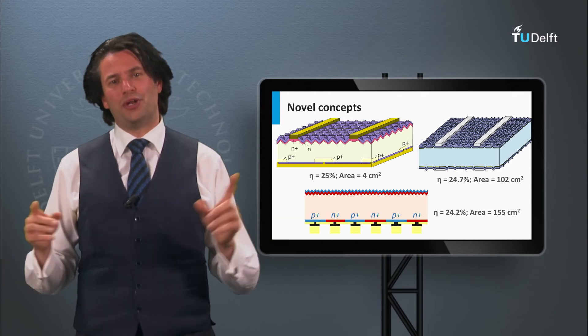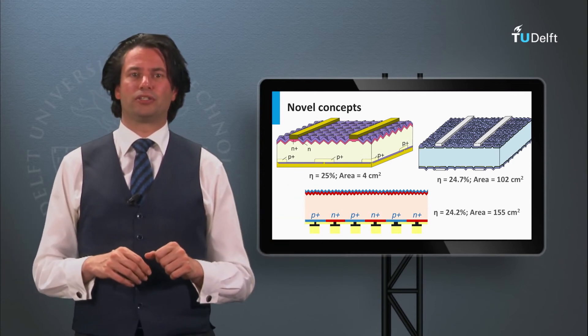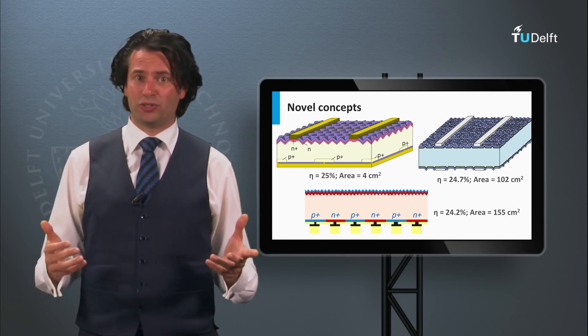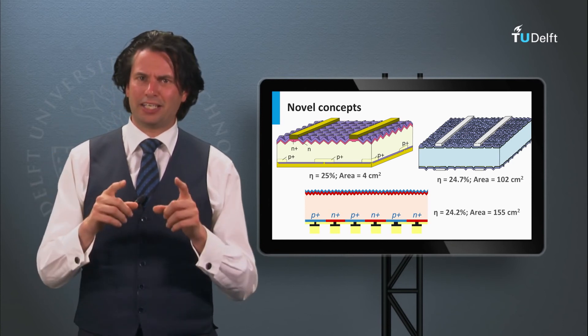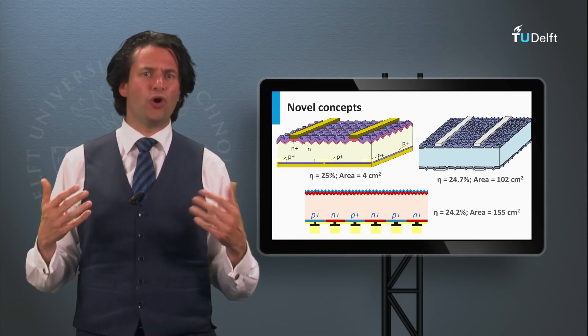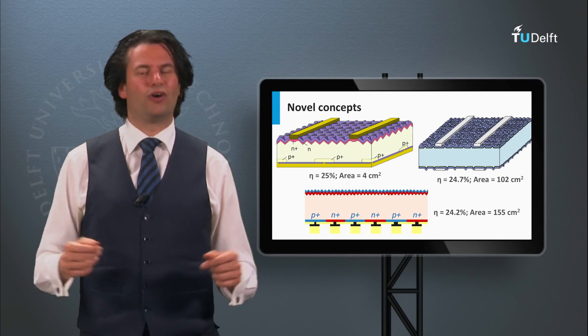Now we know the efficiencies of solar cells. However, in practice we install panels on our roof. In the next block we will answer the question, how do we make solar modules out of solar cells?